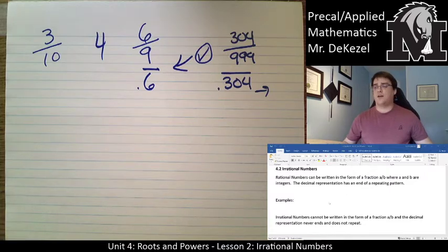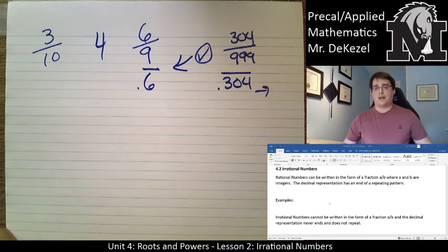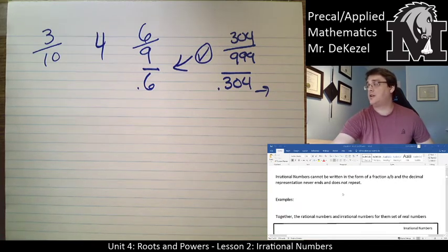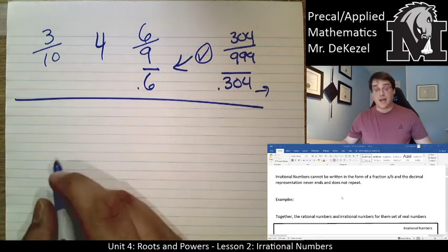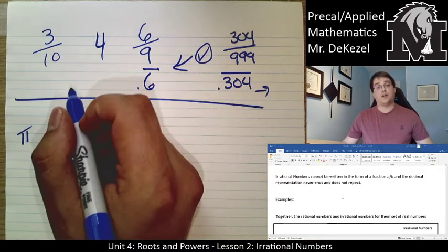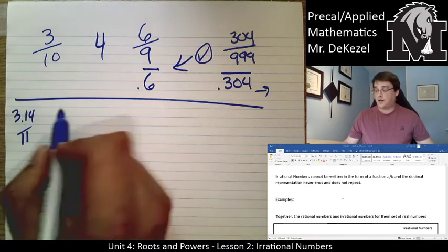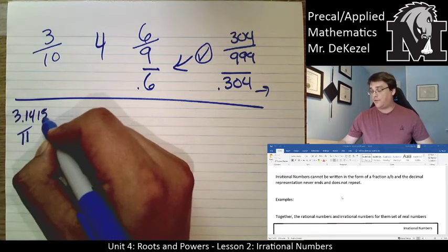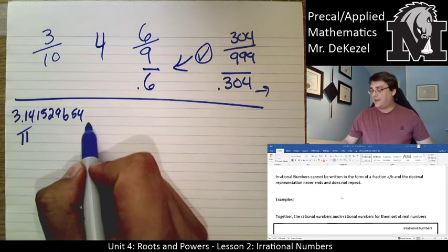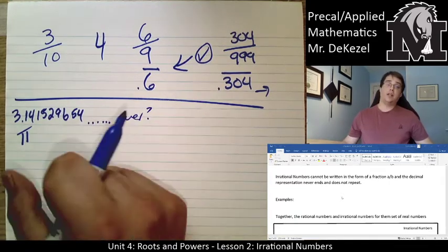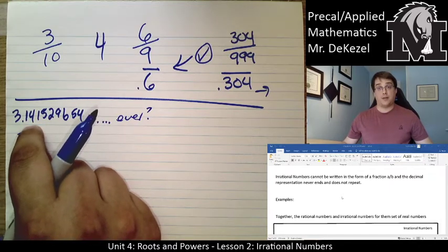As soon as you get a random set of numbers that goes off the screen of your calculator with no discernible pattern, that is an irrational number. Irrational numbers cannot be written in the form a over b, and the decimal representation never ends and does not repeat. For example, pi — some of you might know it as 3.14, but pi is actually 3.14159265... and it continues forever.